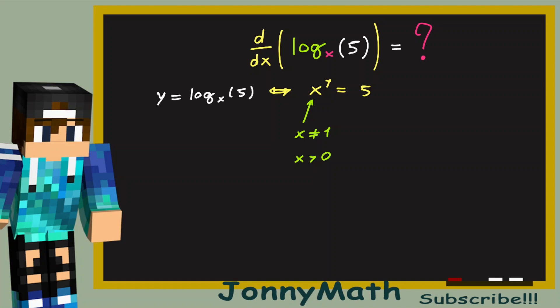Okay, so now we know for what values of x this equation, this weird equation, makes sense. Now let's try to find its derivative. And how do we find the derivative of this function? All right, we said earlier that x to the y equals 5. So we're going to use this equation here to find its derivative, because it's easier. We're going to use implicit differentiation.